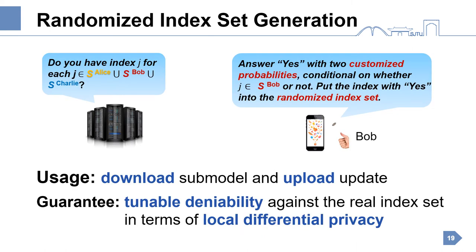Based on the union, each chosen client applies randomized response to generate a randomized index set, which is used to replace and protect the real index set in the download and upload phases. The cloud server asks, do you have a certain index? A client answers yes with two customized probabilities, conditioned on whether the index belongs to its real index set. The probability parameters allow the client to tune privacy and utility.